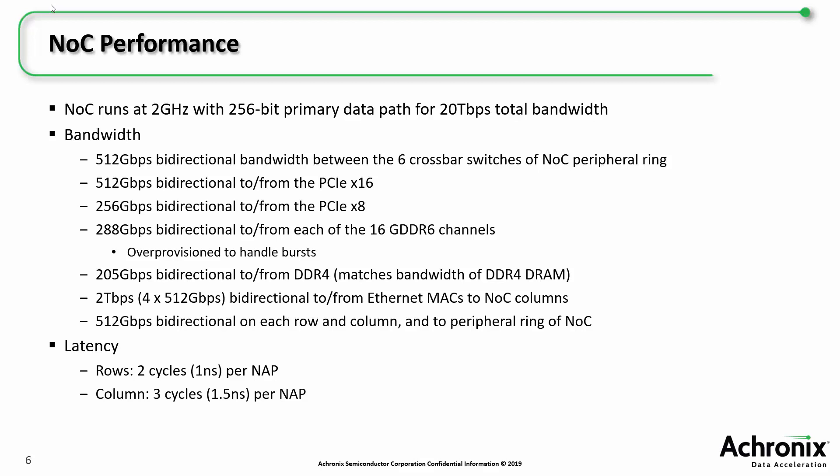The NOC runs on a 2 GHz clock and uses a 256-bit primary data path, allowing each column, each row, and the outer ring of the NOC to support 512 gigabits per second, providing for a total of 20 terabits per second in the entire system. Specifically, the NOC supports 512 gigabits per second bi-directional bandwidth between the six crossbar switches that make up the outer ring, 512 gigabits bi-directional to and from the 16-lane PCIe, and 256 gigabits per second on the 8-lane PCIe. We've over-provisioned the bandwidth for GDDR6 to support bursts, giving up to 288 gigabits per second bi-directional bandwidth on all 16 channels. The NOC can sustain 205 gigabits per second to and from DDR4, plus a total of 2 terabits per second for the Ethernet MACs to NOC columns.